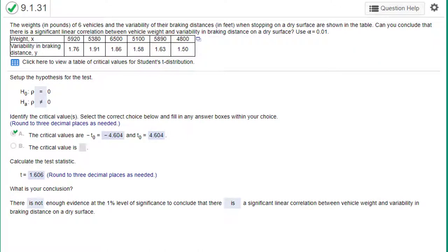Hi, this is Dr. Don and I have a problem out of chapter 9 on correlation. In this problem we're given some raw data - the weight of some vehicles and the braking distance of those vehicles. We're asked: can you conclude there's a significant linear correlation between vehicle weight and variability in braking distance on a dry surface with alpha 0.01?